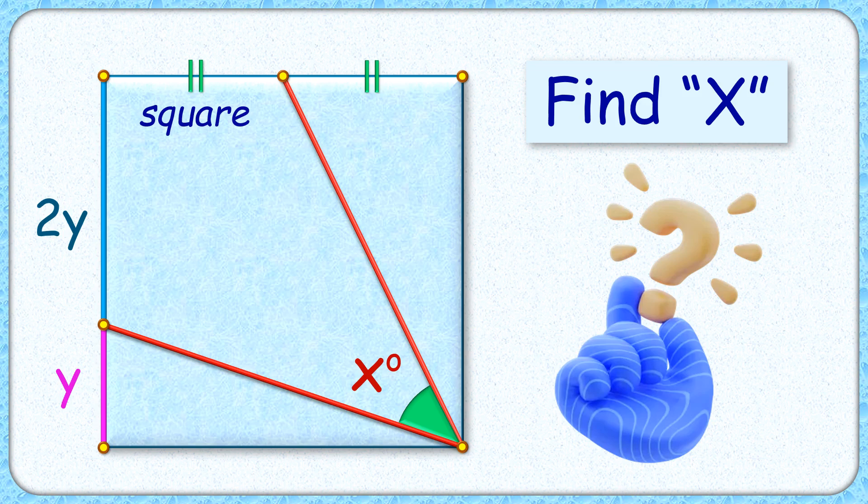This interesting question: we have a square where this point is the midpoint of the side, and here this point is dividing the side in ratio 2 is to 1. Using this limited data, we have to find this green angle, or value of x, without using any trigonometry.